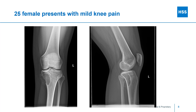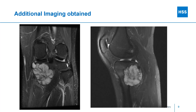Here's another case example to illustrate the point. This is a 25-year-old female who presents with mild pain in the knee. X-rays are obtained, which show this clear abnormality in the medial tibia. Advanced imaging in the form of an MRI is then obtained, which also shows the extent of the tumor within the tibia, gives you some indication of the tumor matrix, and helps plan the resection of this tumor.